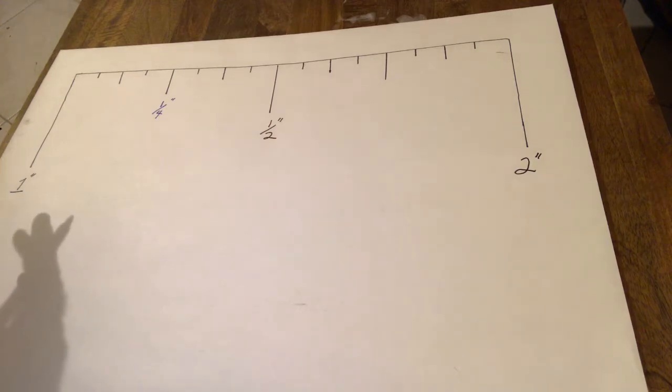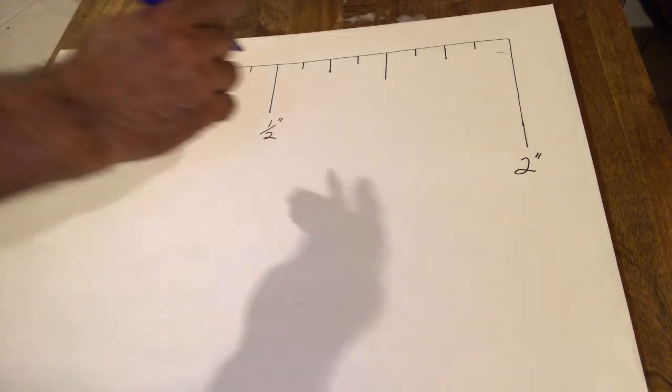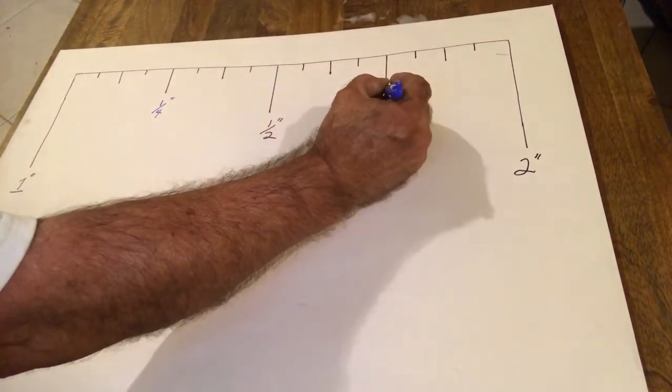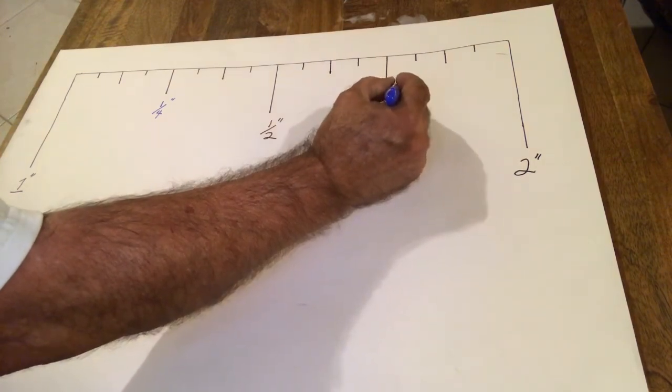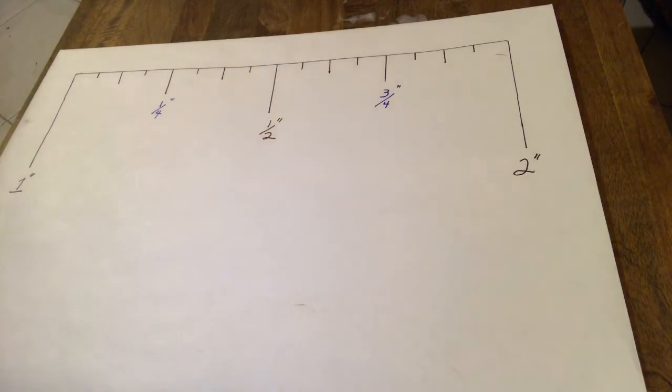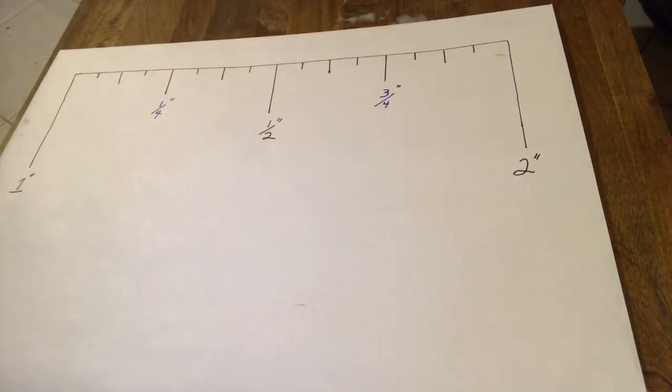So, you would have your one-inch, your quarter, your half, and then your three-quarter. And then your next inch mark.